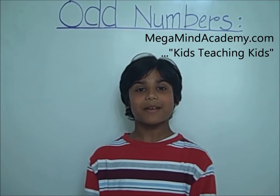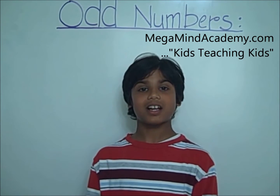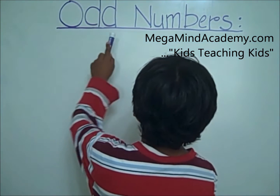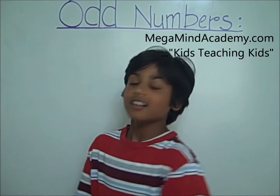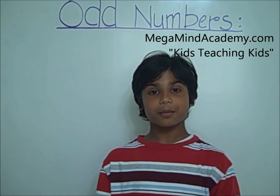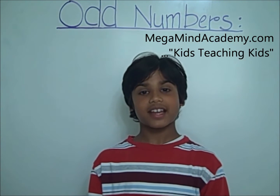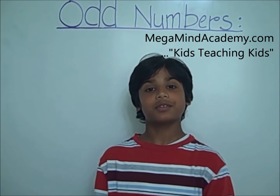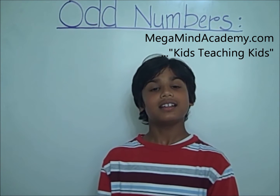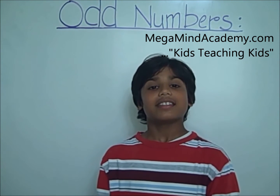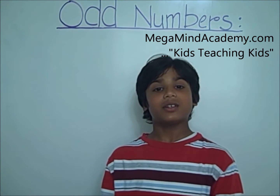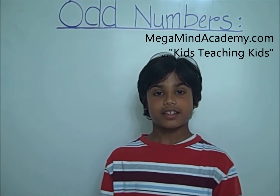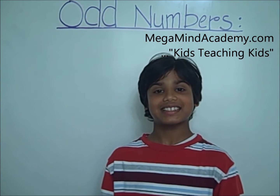Hello! Today we're going to learn about odd numbers. Odd numbers are the numbers that cannot be equally divided into groups of two. That means they don't have a pair. They are alone numbers.